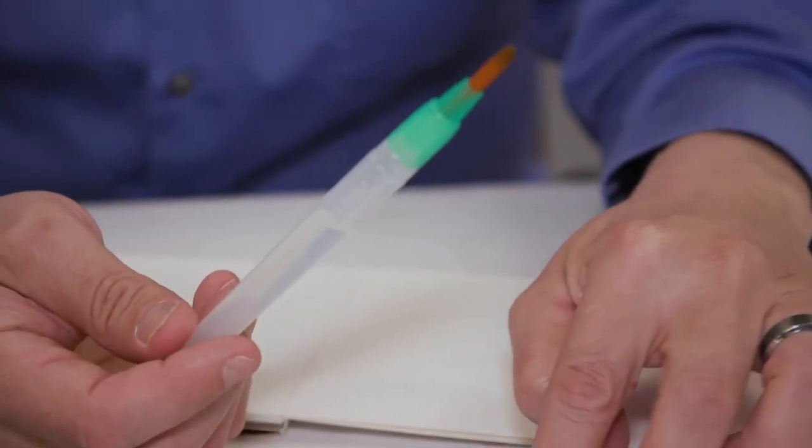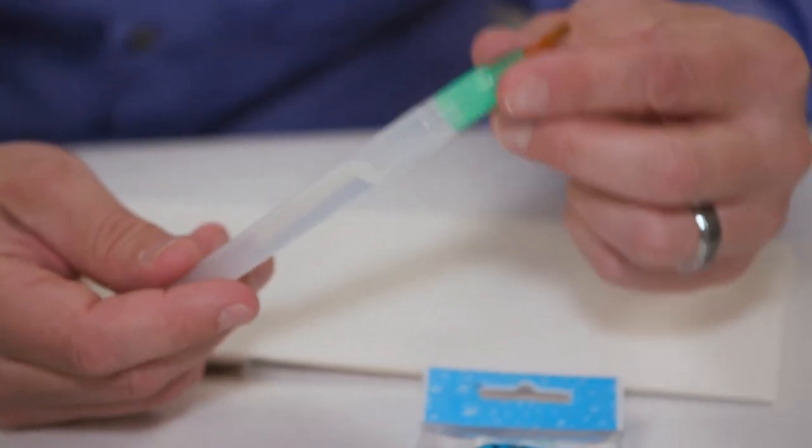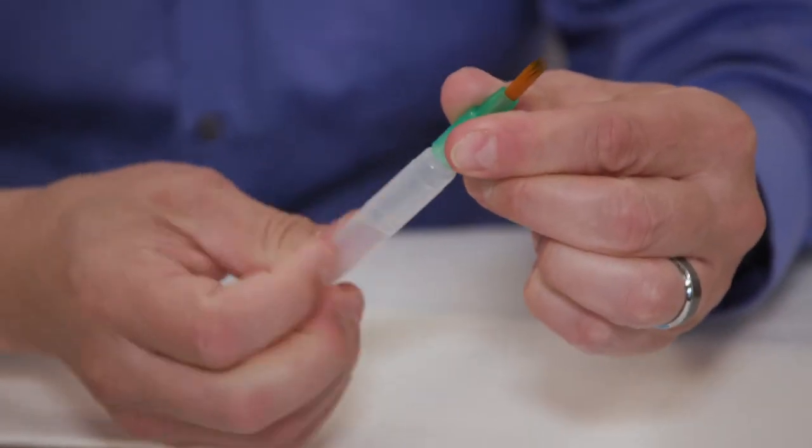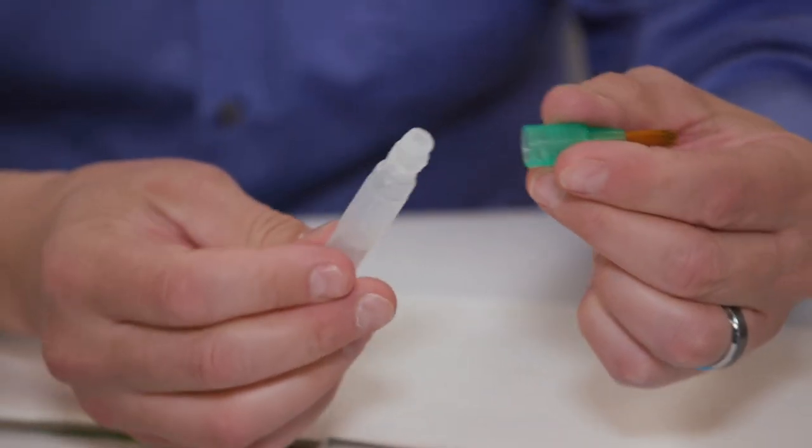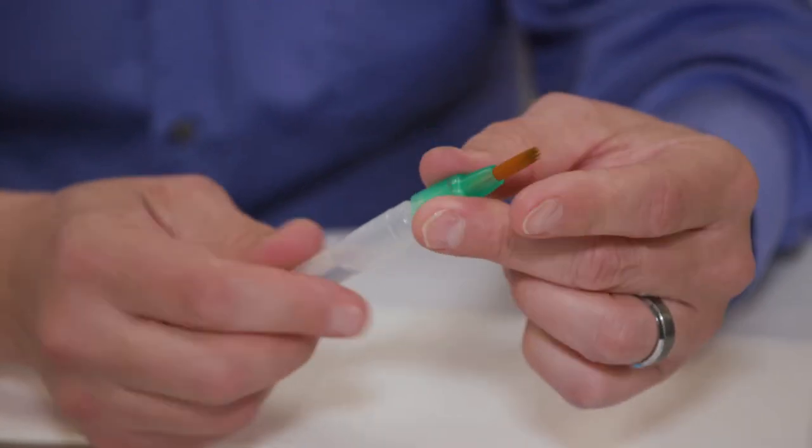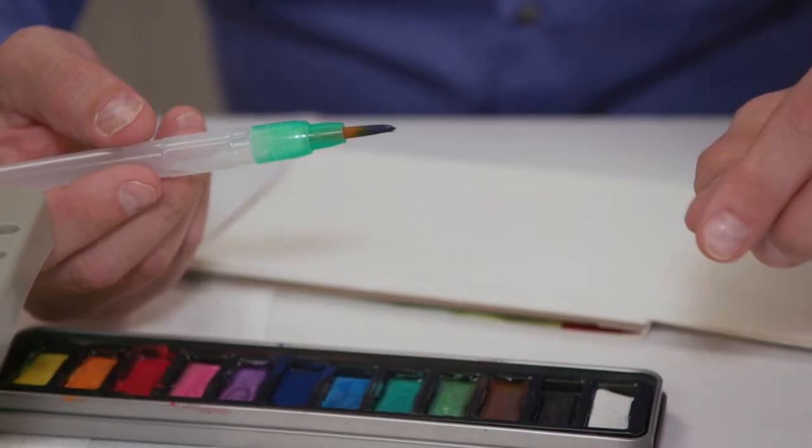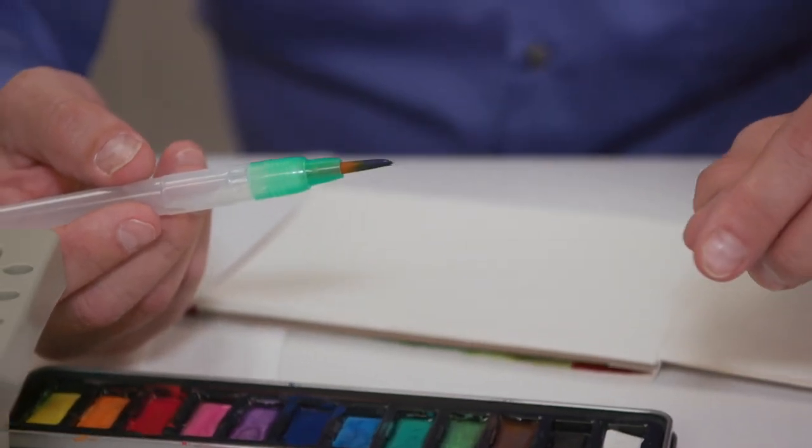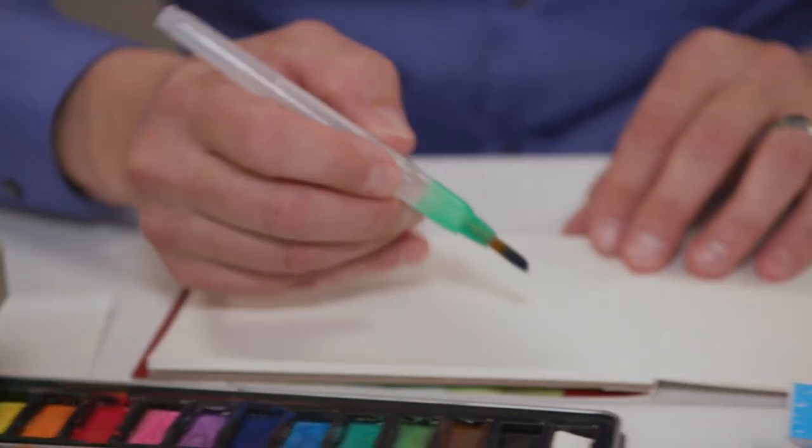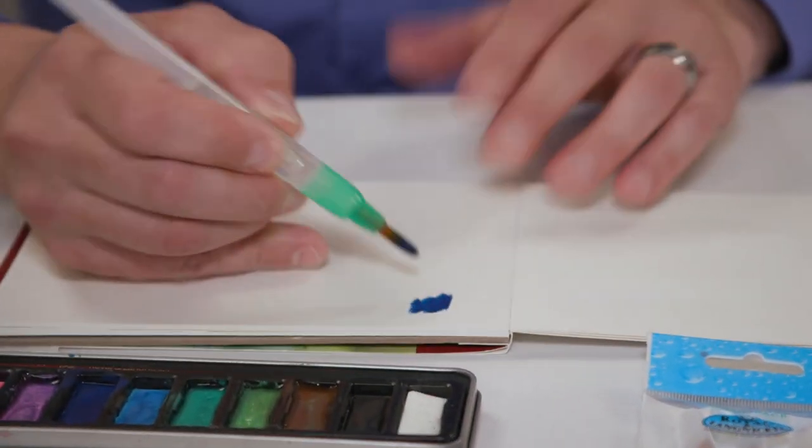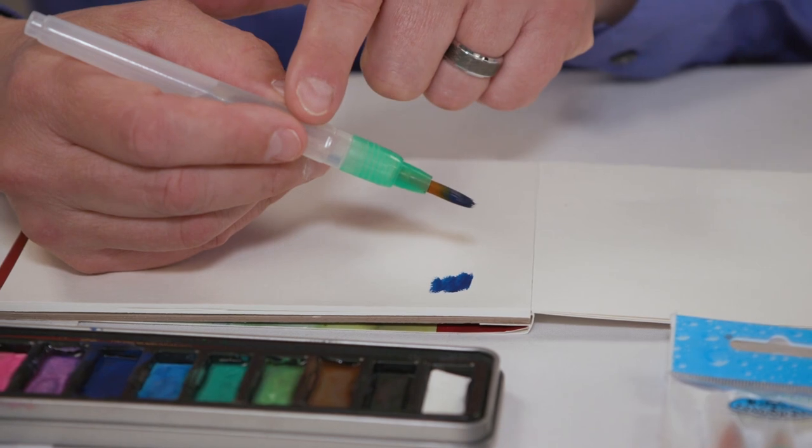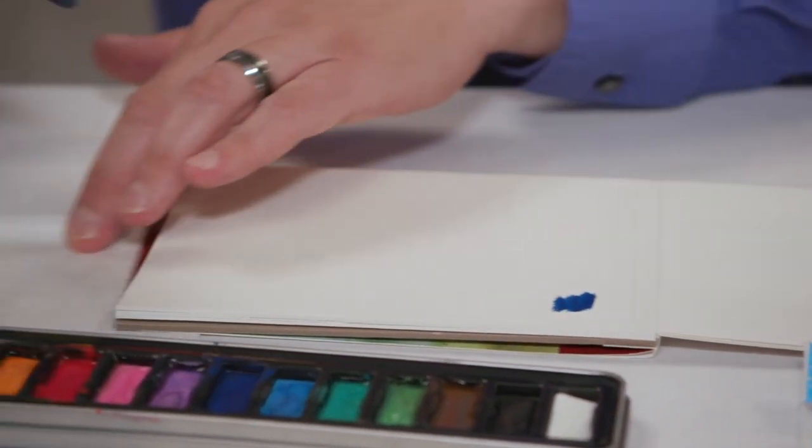The last brush that I want to show you is our Aqua Flow, and these come in three different sizes. They're sold in packs of three. The heads on these brushes come off so that you can fill the handles with water, liquid water color, fluid ink, but you can also fill them with rubbing alcohol, use them with alcohol base markers and Sharpie markers. The nice thing with these is you don't need to have water because it's in the handle.